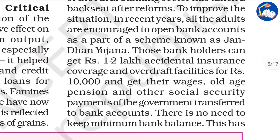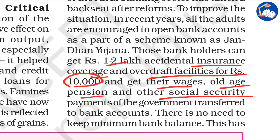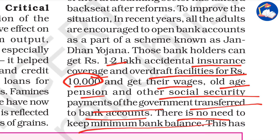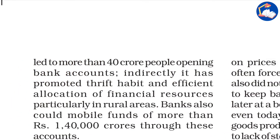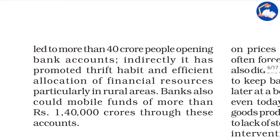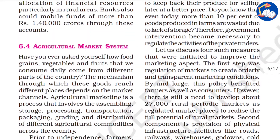Jan Dhan Yojana account holders can get one to two lakh accidental insurance coverage, overdraft facilities of 10,000 rupees, and have their wages, old age pension, and other social security payments transferred to bank accounts. There is no need to maintain a minimum bank balance. The government implemented this to develop a saving culture among people, resulting in more than 40 crore people opening bank accounts and the government mobilizing a fund of about 1 lakh 40,000 crores.